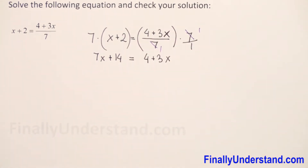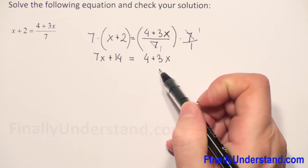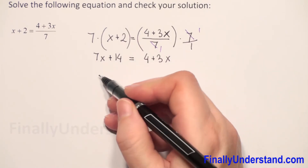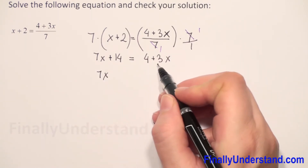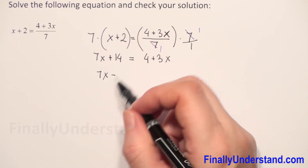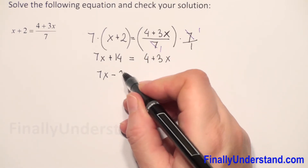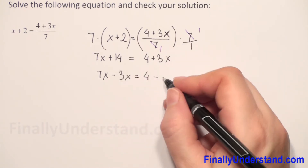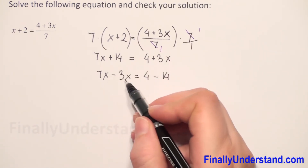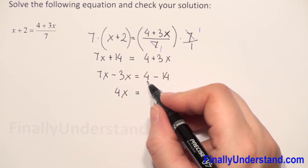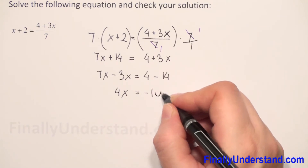Next we will move the unknown to the left side and the constant to the right side. So we have 7x. We have positive 3x, so we change to the opposite sign — when we move a number or variable we have to change the sign. So it will be minus 3x on the left and minus 14 on the right. 7x minus 3x is 4x, and 4 minus 14 is negative 10.